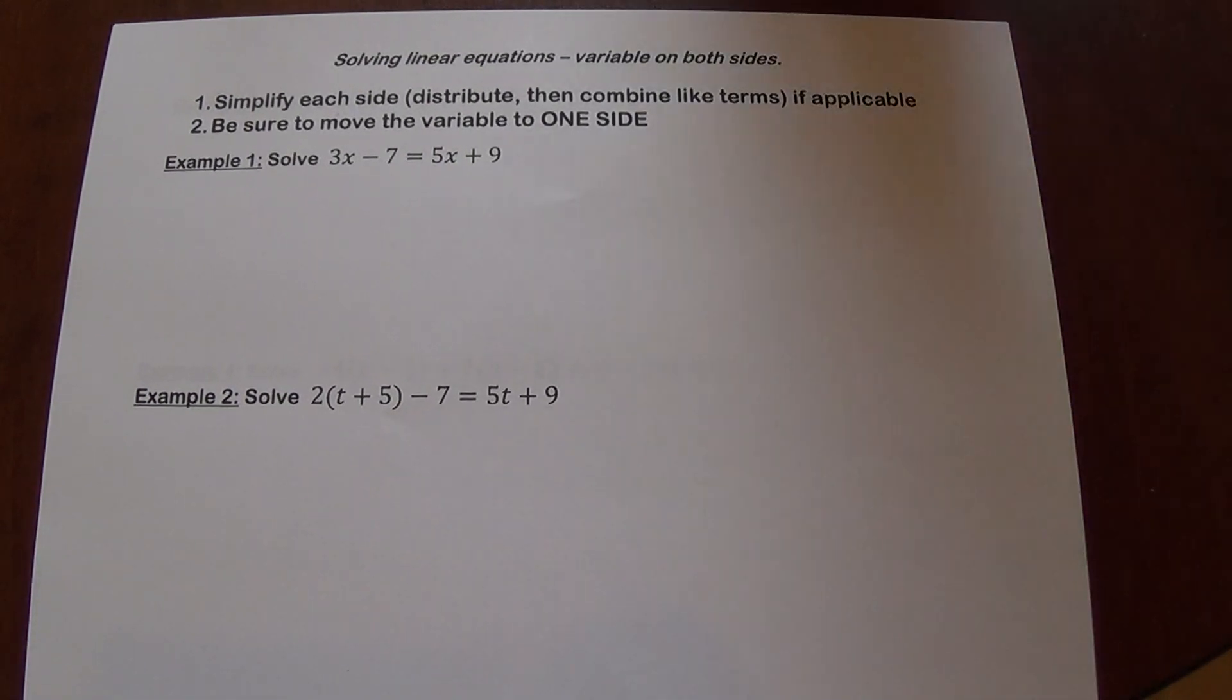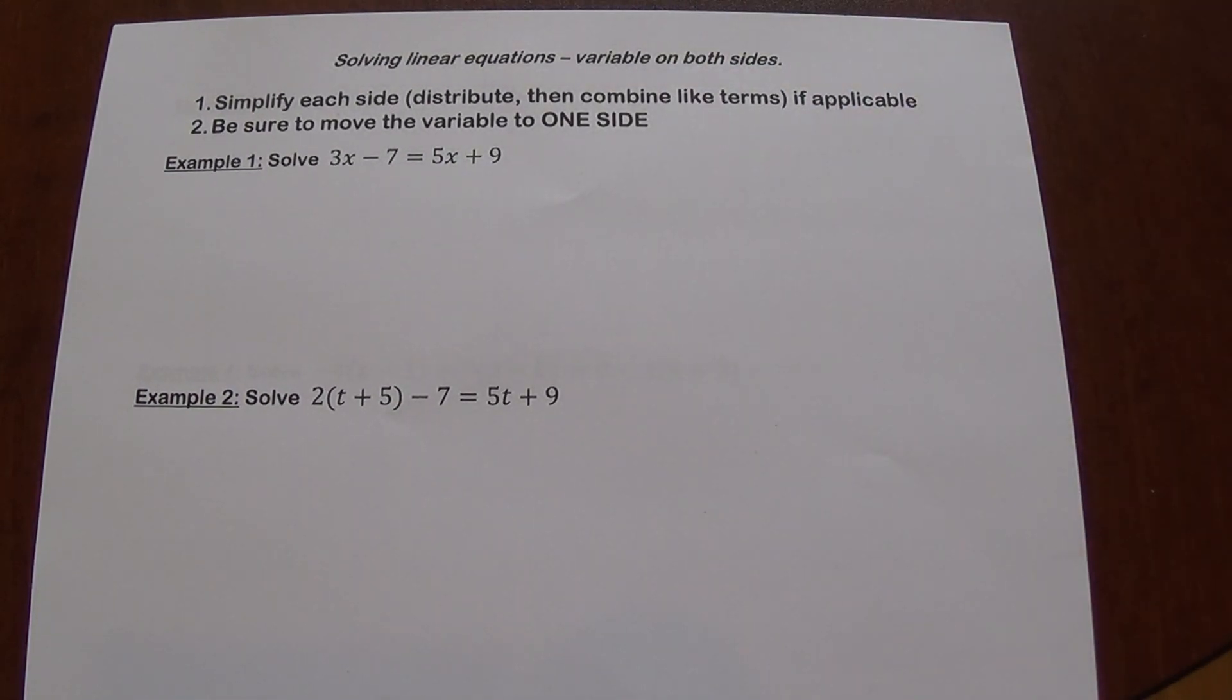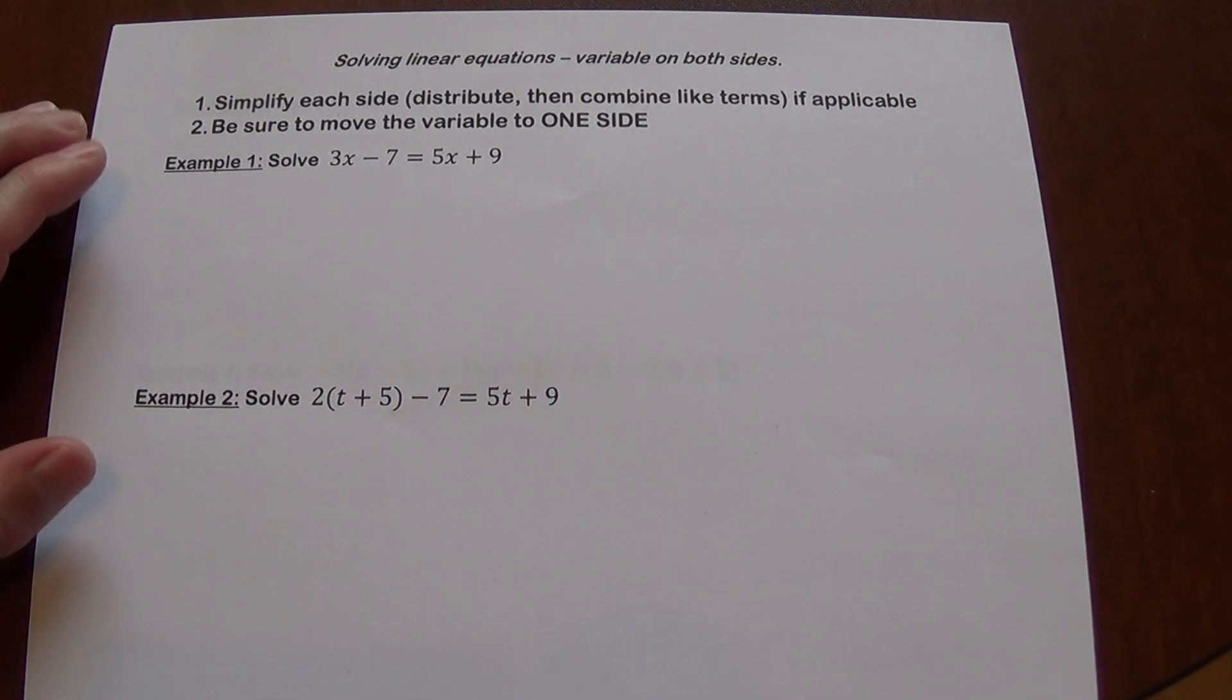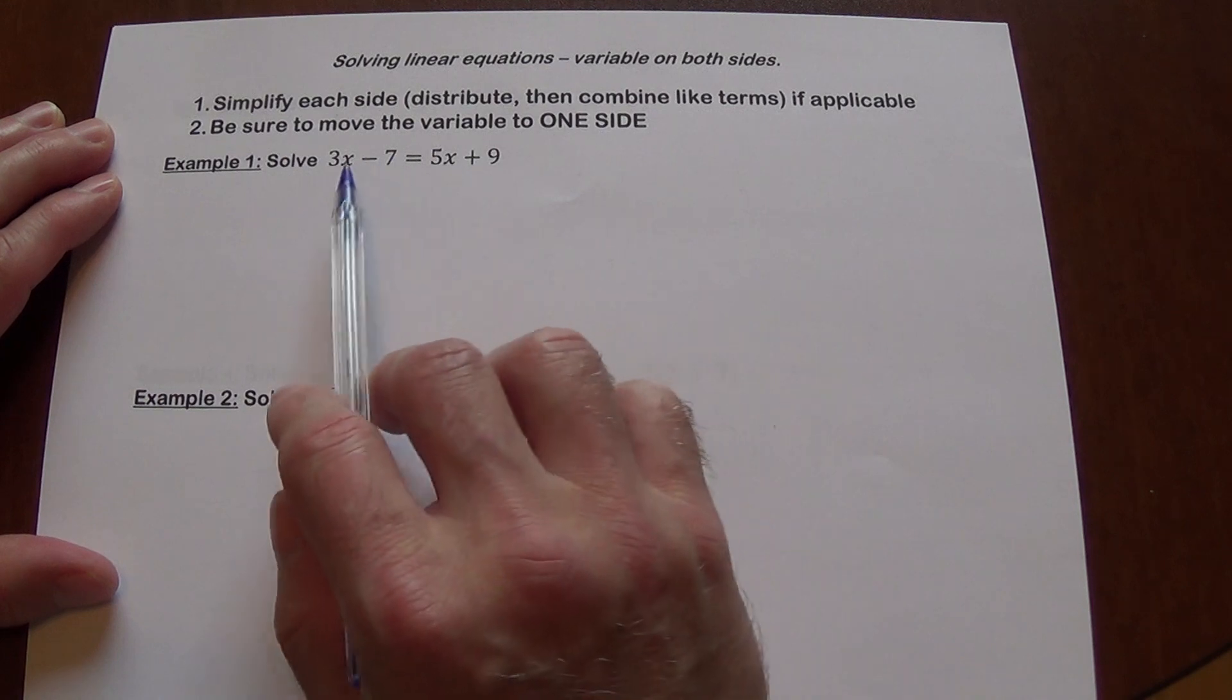Hi. We are going to talk about how to solve linear equations when the variable is on both sides. We have a pretty standard approach for that. We are going to simplify each side if possible. Sometimes you have to distribute, sometimes you have to collect like terms. And then we are going to move our variable to one side only, which side does not matter. So let's take a look at this.